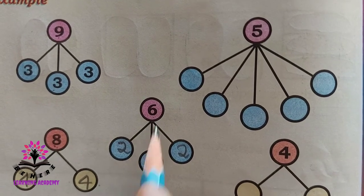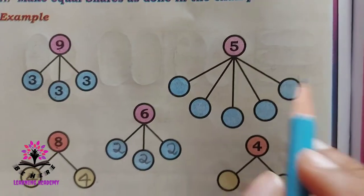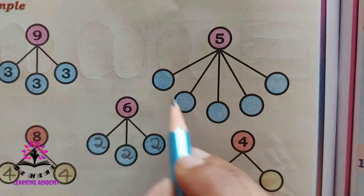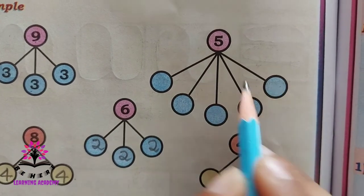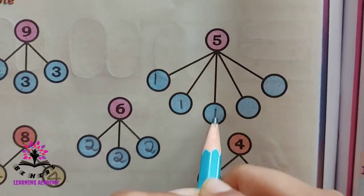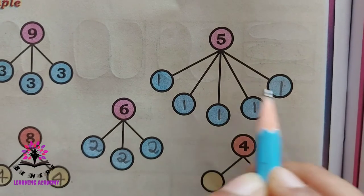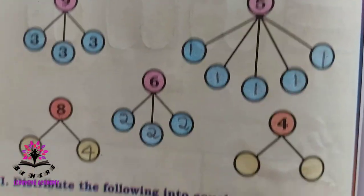Six — you are dividing by three. What will it be? Two plus two plus two equals six. Otherwise, two times three is six. Five divided in five boxes — it will be one, one, one, one and one — so it will be five.